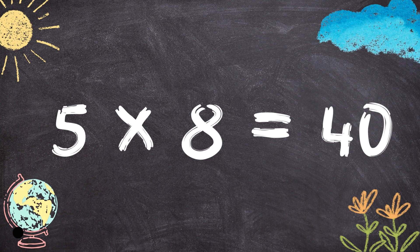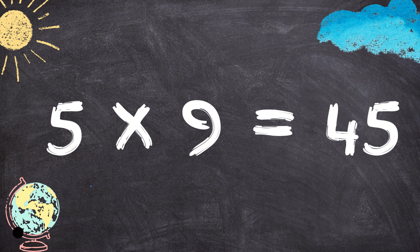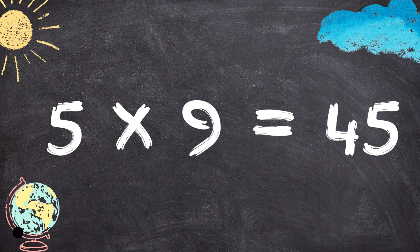5 times 8 equals 40. 5 times 9 equals 45.